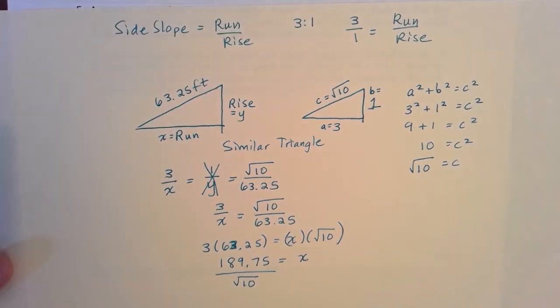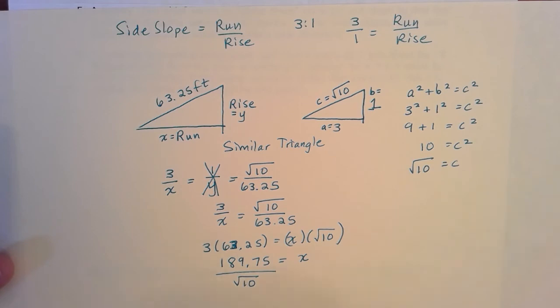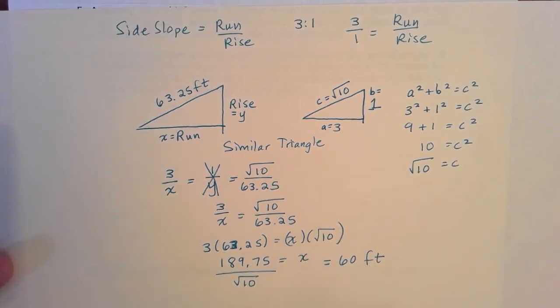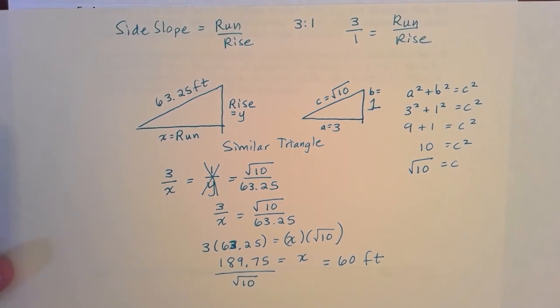All right, so we'll wind up with that. And then if we put that into our calculator, we do find that X is equal to 60 feet. All right, so that's going to be the horizontal distance of that three to one side slope when we know that the slope angle is equal to 63.25 feet.